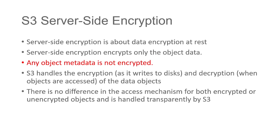In client-side encryption, keys are managed by the user, whereas in server-side encryption, AWS takes care of everything. Server-side encryption is about data encryption at rest. It encrypts only the object data — any object metadata is not encrypted. S3 handles encryption as it writes to disk and decryption when objects are accessed. There is no difference in access mechanism for encrypted or unencrypted objects; it is handled transparently by S3.